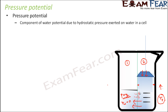Pressure potential is the component of water potential which is due to the hydrostatic pressure exerted on water in a cell — the pressure exerted by the water because of this mechanical pressure. Even when we talk about a cell: if too much water enters inside the cell, it will start swelling up. If the water which has entered is really too much, too much pressure will be exerted on the walls of the cell, and the cells might even rupture. So that is pressure potential — it is exerted by water on the walls of the container.